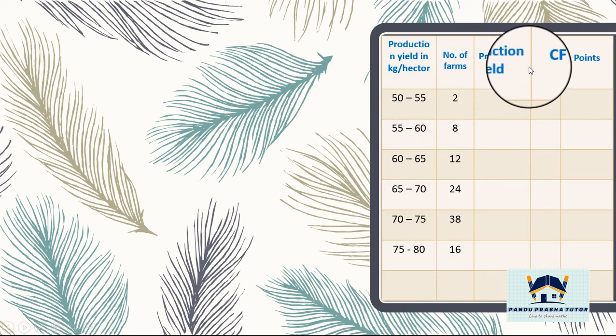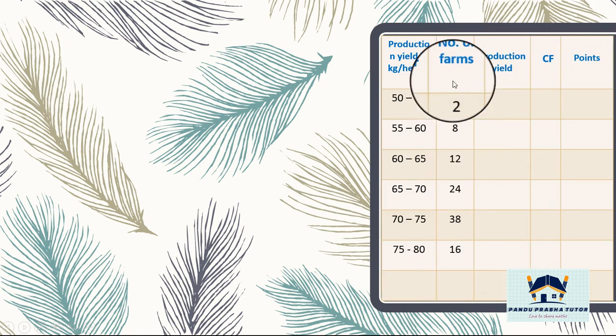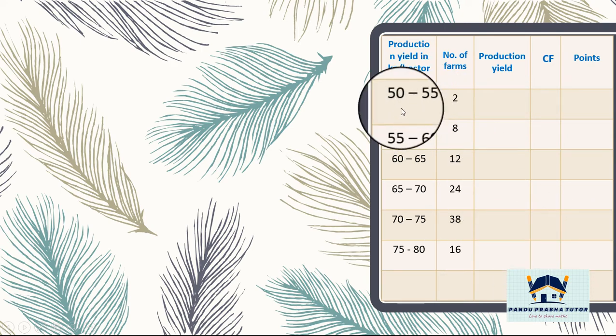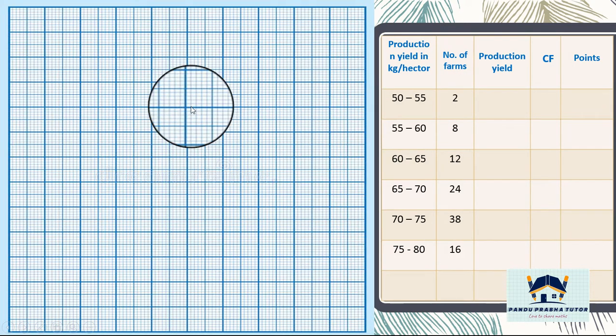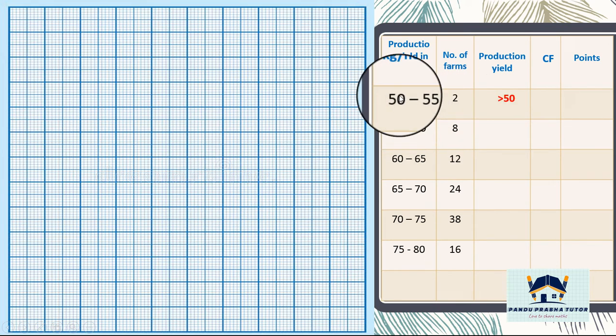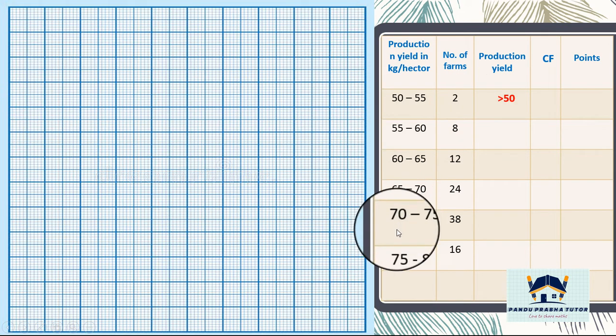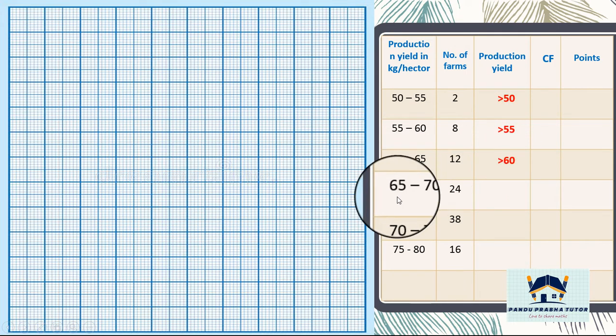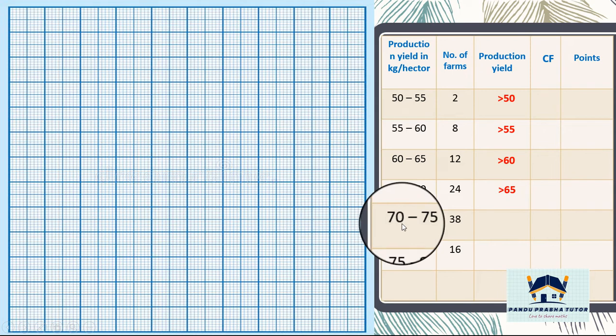Production yield in kg per hectare, number of farms, production yield, cumulative frequency, and last one is point. Since we are taking more than type, take the lower limit. First one is greater than 50, greater than 55, greater than 60, greater than 65, greater than 70, greater than 75.